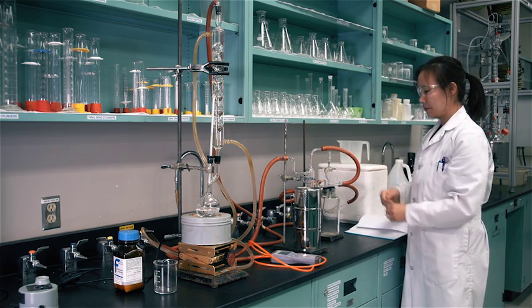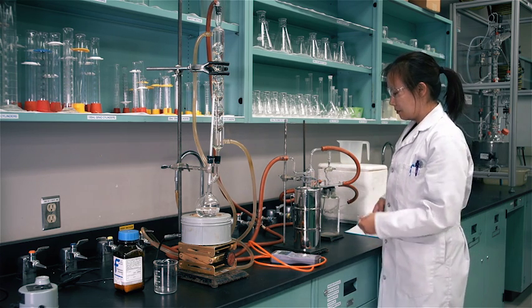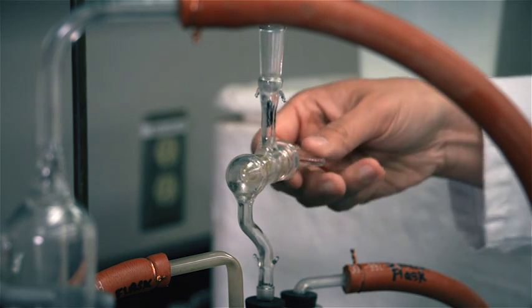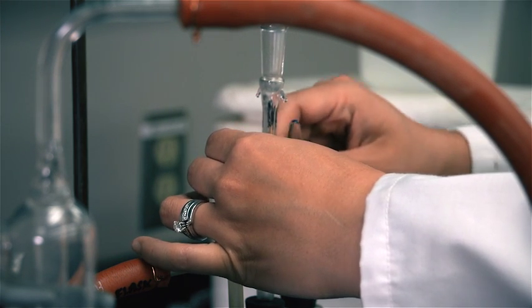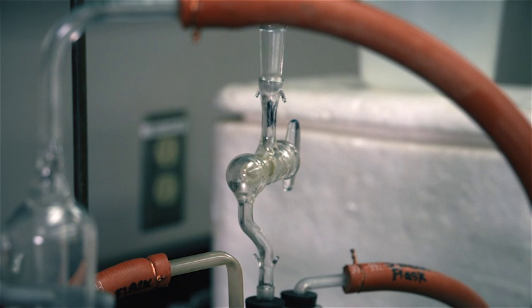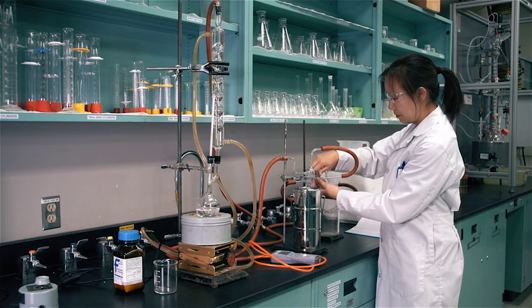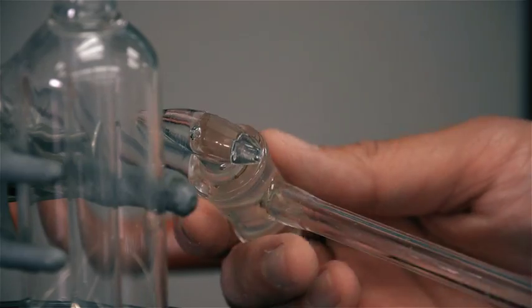One stopcock is situated on the safety bottle. Air will enter the experimental system when this stopcock is open. Along with the safety bottle, this stopcock is a safety feature of the experimental setup. The other stopcock is situated on the tubing adjacent to the safety bottle.